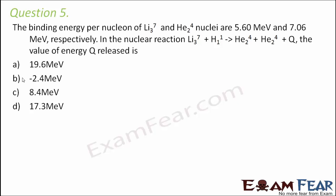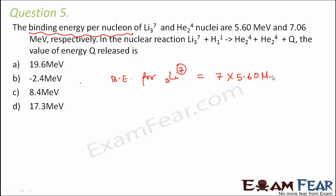In this problem, we are given the binding energy per nucleon for lithium and helium. To get the total binding energy of lithium, we note that the mass number of lithium is 7. We use the binding energy per nucleon values given: for lithium it is 5.60 MeV per nucleon with 7 nucleons, and for helium it is 7.06 MeV per nucleon with 4 nucleons.